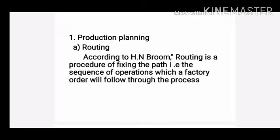Let us see the first element, that is production planning, which involves three functions. The first function is routing. According to H.N. Broom, routing is a procedure to fixing the path — that is the sequence of operations which a factory order will follow through the process.